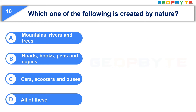Your time is up and the correct answer is Option A: Mountains, Rivers and Trees.